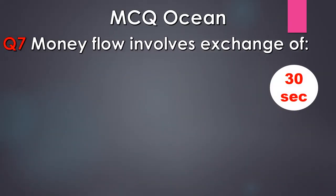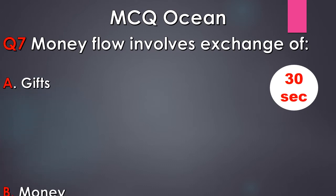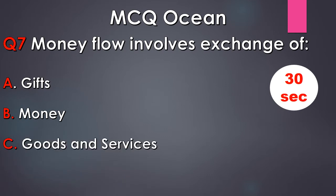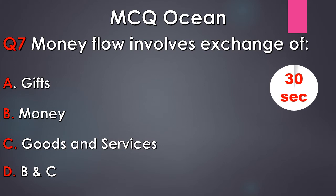Question number 7. Money flow involves exchange of: A. Gifts, B. Money, C. Goods and services, D. Option B and C both. Your time starts now.